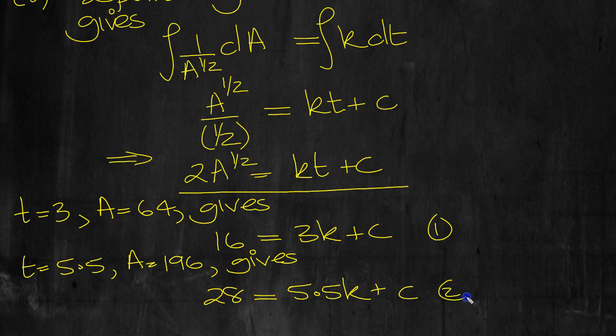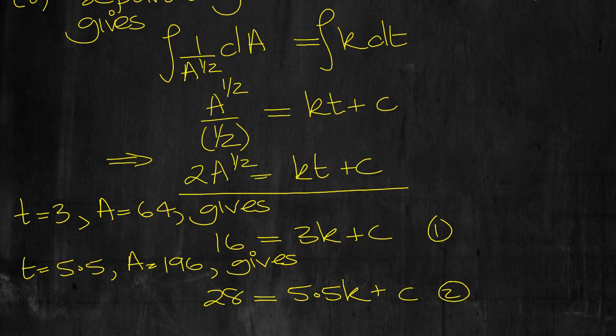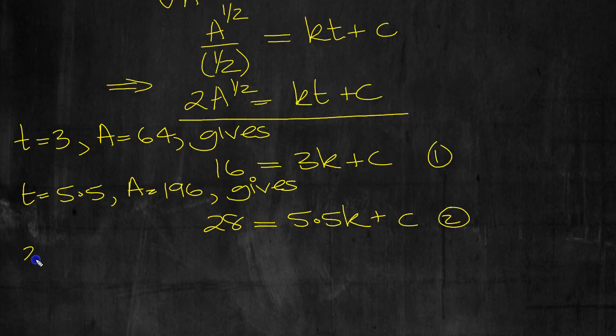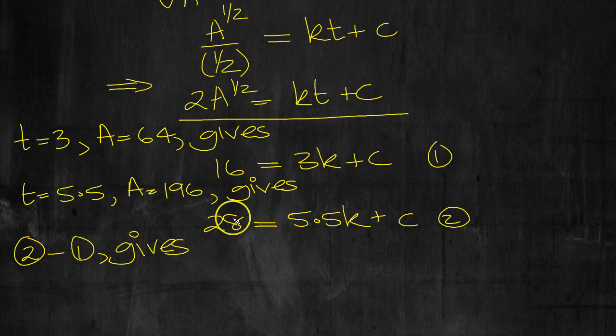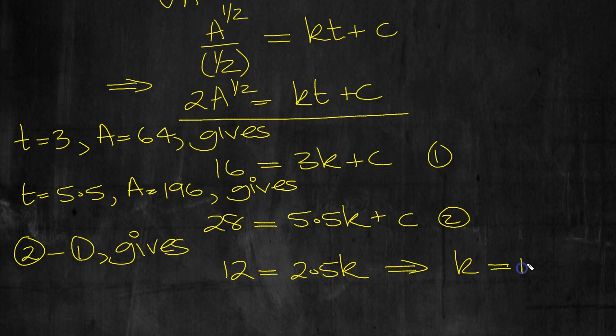And that's equation 2. If we do 2 take 1, the C's will cancel. So 2 minus 1 then gives... We've got two equations in two unknowns. 28 minus 16 is 12. 5.5 minus 3 is 2.5K. And the C's cancel. That's why we're doing it. So K equals 12 over 2.5. Times by 4 times by 4 is 48 over 10. So K is 4.8. We'll tap that in the calculator if we need to.